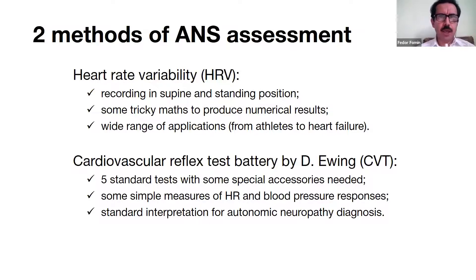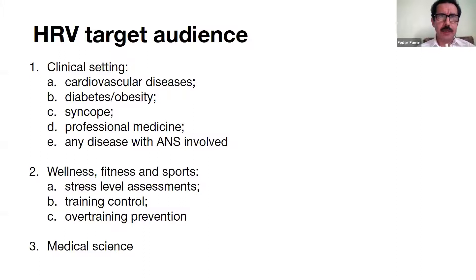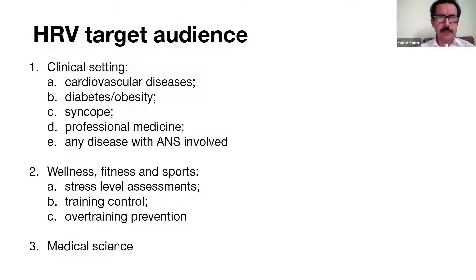The first method is heart rate variability, which is very universal because it gives us understanding of the current autonomic nervous system function in different situations. The second method is the cardiovascular reflex test battery, which is dedicated for one particular purpose: to diagnose autonomic neuropathy. HRV, since the autonomic nervous system is involved in every function, can be used in almost any clinical situation — from cardiology to endocrinology to syncope analysis and arthritis testing.